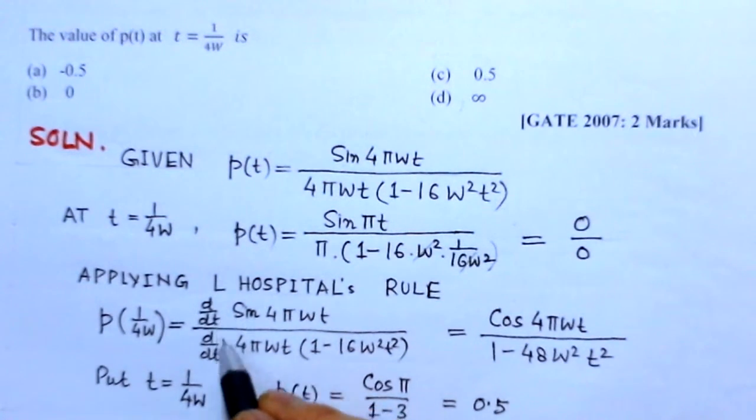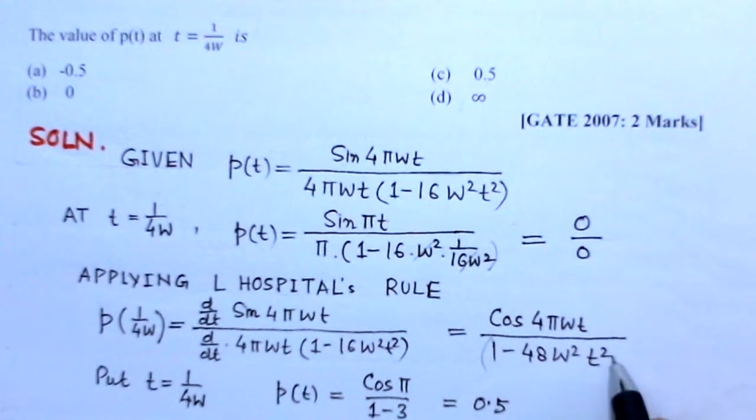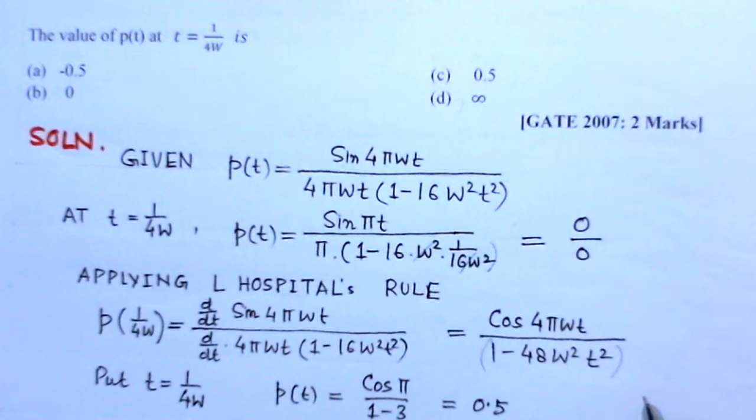So d by dt of sin 4πWt divided by this. So if you differentiate it, you will find cos of 4πWt divided by 1 minus 48W²t².